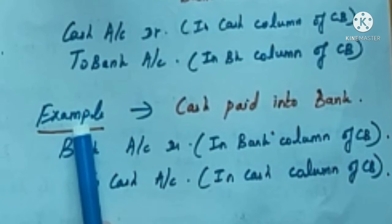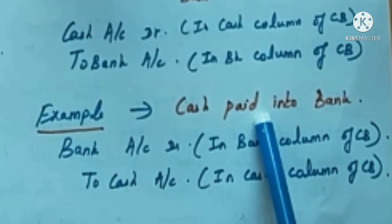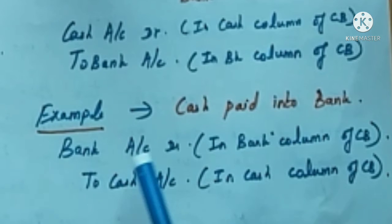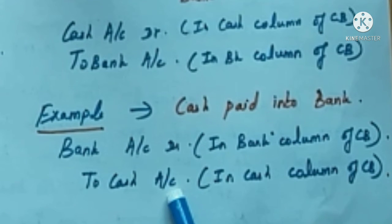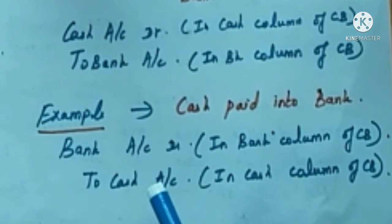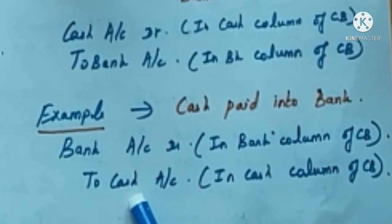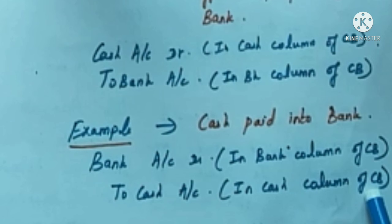Now let's see another example: cash paid into bank. When you pay cash into the bank, bank is receiving, so bank account is debited. Cash is going out, so cash account is credited — in other words, cash account is credited because there is a decrease in asset. Now, when you prepare a triple column cash book, it has on the debit side: discount column, cash column, and bank column.